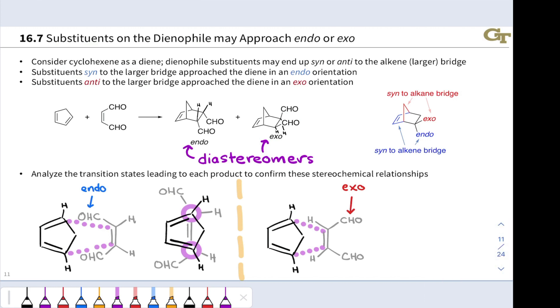We think about the Newman projection view of this, again looking down those newly forming bonds, the purple dotted lines, we get a picture like this, very similar to the endo picture, but now notice that the CHO groups and the Hs at each carbon have changed places.